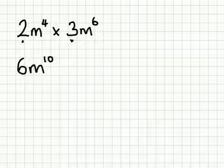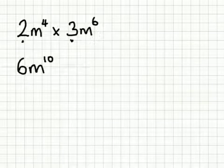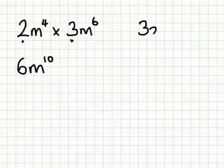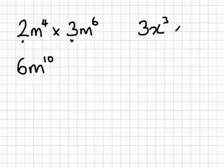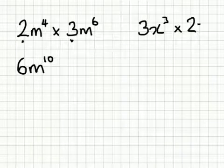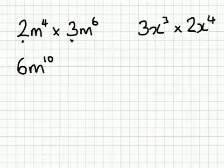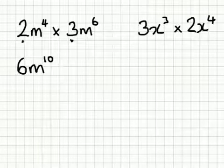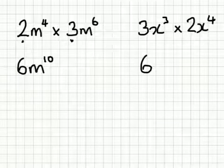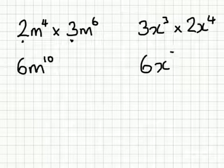Now if you had something that looked like this, 3x to the power 3 multiplied by 2x to the power 4, you do exactly the same. 3 times 2 is 6. x to the power 3 times x to the power 4 gives me x to the power 7.